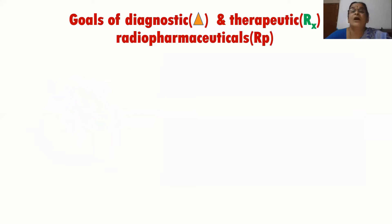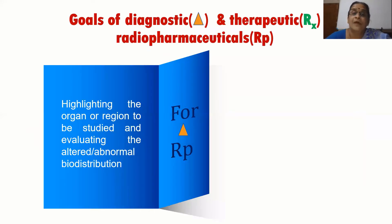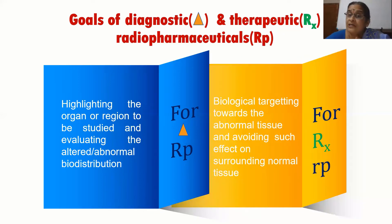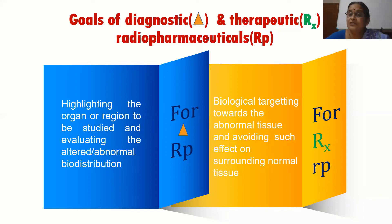Now, the goals of diagnostic and therapeutic radiopharmaceuticals: firstly, highlighting the organ or region to be studied and evaluating the altered or abnormal biodistribution is the goal for diagnostic radiopharmaceuticals. For therapeutic radiopharmaceuticals, the goal is biological targeting towards the abnormal tissue while avoiding such effects on the surrounding normal tissue.